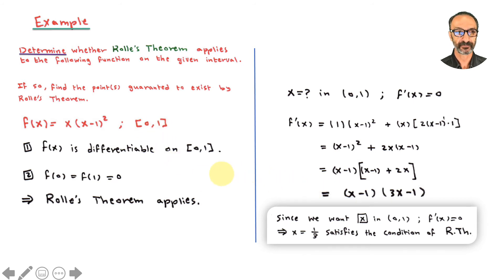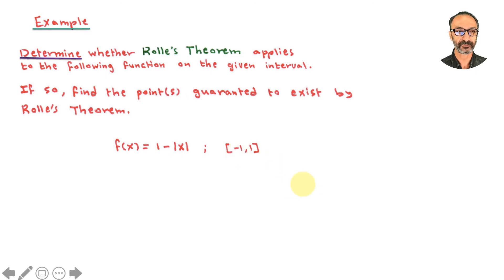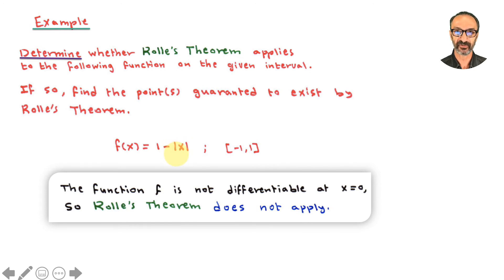Next example: f(x)=1−|x| on [−1,1]. The function F is not differentiable at x=0, which is between −1 and 1. The absolute value function has a V-shape with a sharp edge — this one is flipped upside down and shifted up one unit. Because of the sharp edge at 0, it's not differentiable there, so Rolle's theorem does not apply.